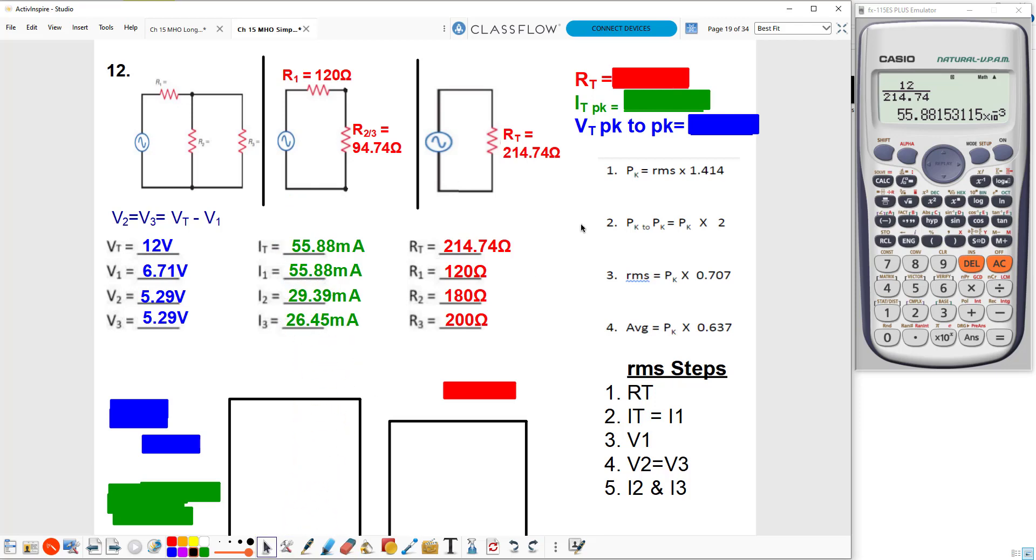And now I just have to find my AC values. So the first thing I'm asked for is RT. Well, RT is just RT, so there's no additional work there. IT peak—all right, well here I have an IT RMS of 55.88 milliamps, so I take the 55.88 milliamps times 1.414 using formula number one to find peak when I have RMS, and that gives me a value of 79.01 milliamps.